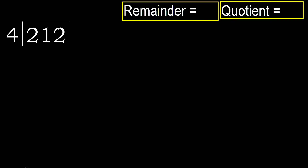212 divided by 4. 2 is less, therefore next. 21 is not less, therefore work with 21. 4 multiplied by which number is nearest to 21 but not greater? 4 multiplied by 6 is 24.